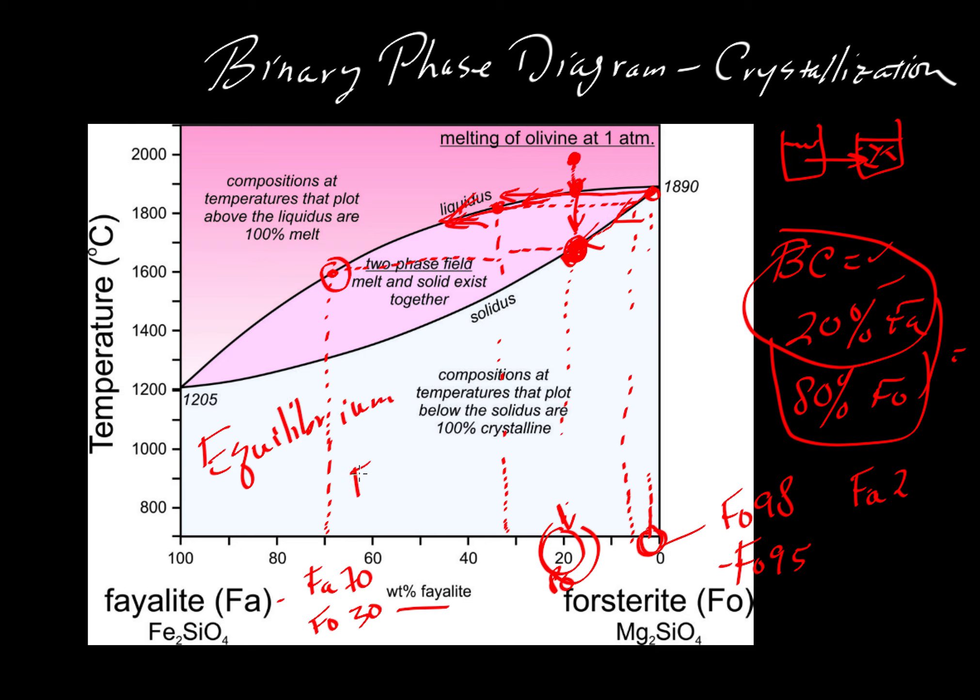If we had fractional crystallization, where we take these liquids and remove them completely from the system, where we don't allow the crystals and liquids to stay in contact with one another, we could have liquids that overshoot that boundary there, and we could have solids that overshoot that boundary there. But that is a case that we will consider for a different video.